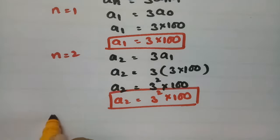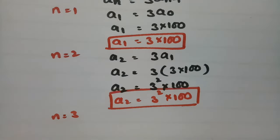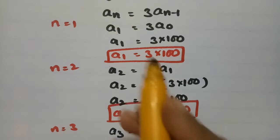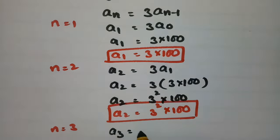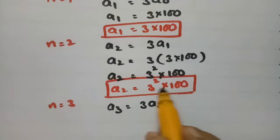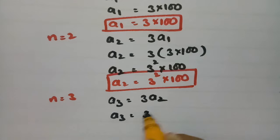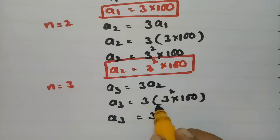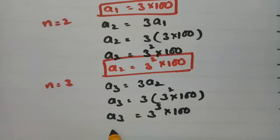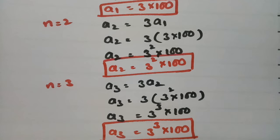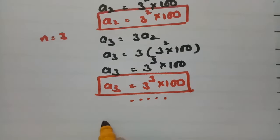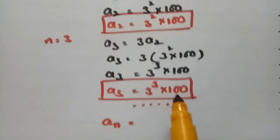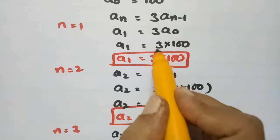If we keep n equal to 3, then A3 equals 3 times of A2. What is A2? A2 equals 3 squared into 100. So A3 can be written as 3 cubed into 100. Similarly if we keep on writing like this — for n=1 the power is 1, for n=2 the power is 2, for n=3 the power is 3 — in general the Nth term will be 3 to the power N into 100.